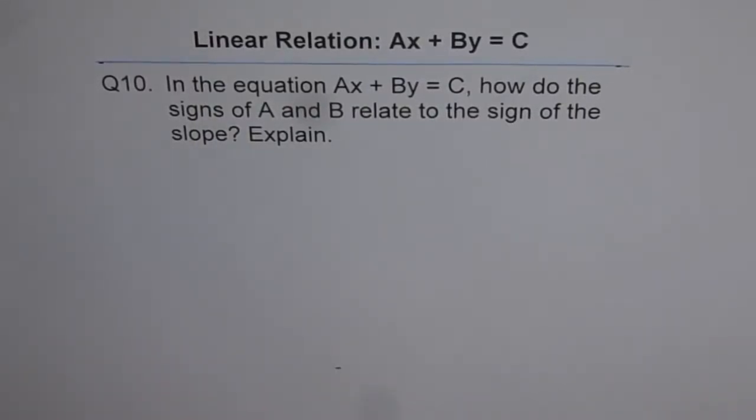Here is the last problem on our series of understanding linear relations, which are related with the equation AX plus BY equals to C. And what we noticed in these 10 examples was that both X and Y variables are fairly independent.